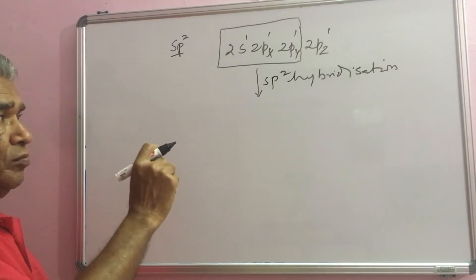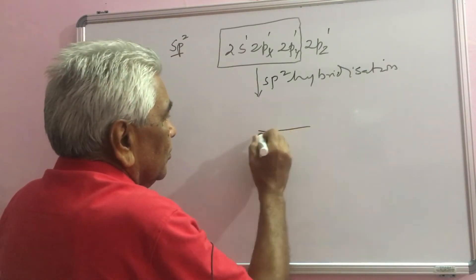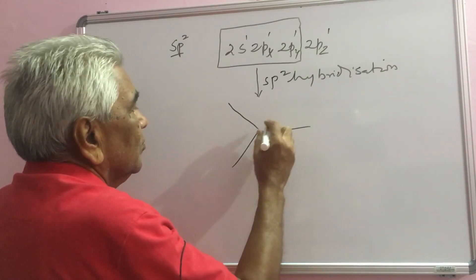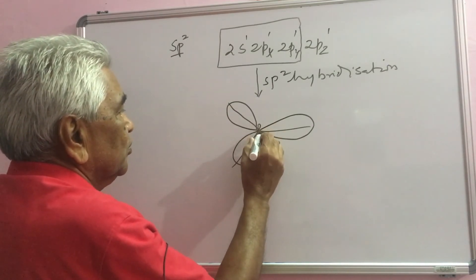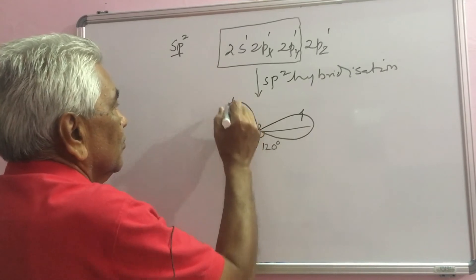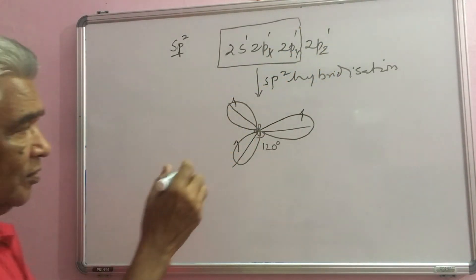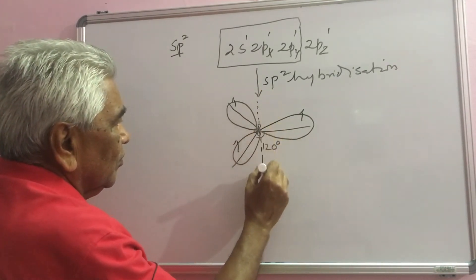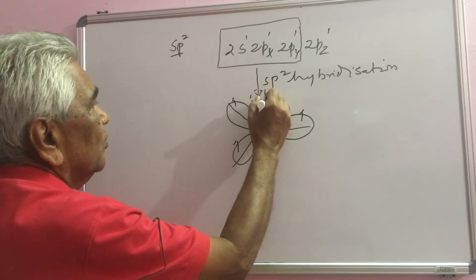The newly formed 3 sp2 hybrid orbitals are in one plane directed to each other at an angle of 120 degrees. This is the shape with a small cusp, each having 1 electron. The unused pz orbital stands perpendicular to this plane. This also has 1 electron.